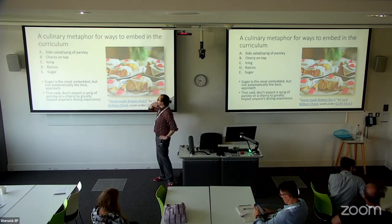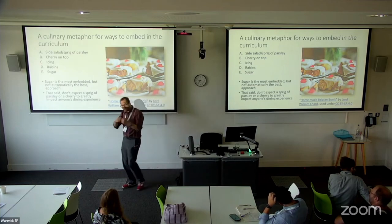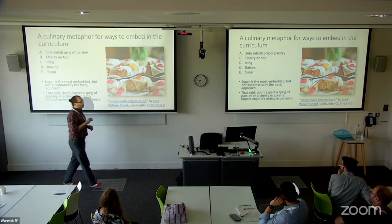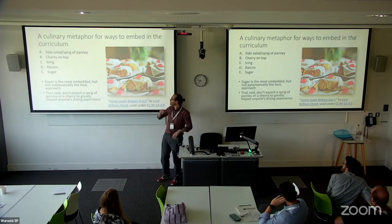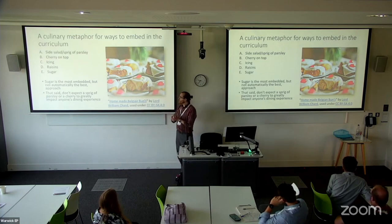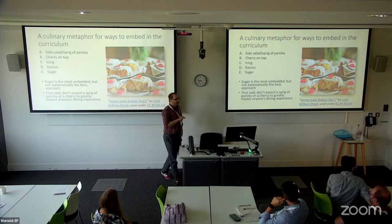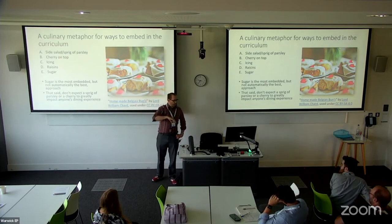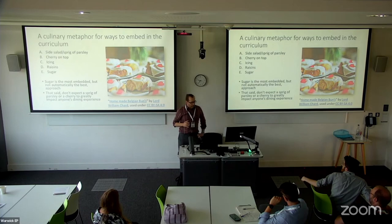Raisins are baked in and dotted throughout. If you don't like raisins, you'll have to put in a reasonable effort to pull them out — but you can. They're also quite discreet: when you find a raisin, you know you've got a raisin. And lastly, the sugar. The sugar is essentially invisible, baked within the cake, but it's there and makes a fundamental difference. Sugar is the most embedded on this scale. It doesn't automatically mean it's the best approach in every context — though probably a sprig of parsley shouldn't be expected to have really dramatic impacts across the board.